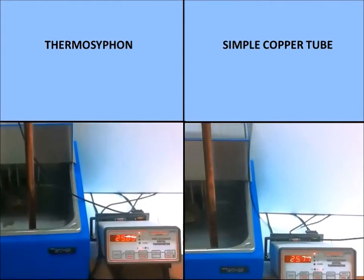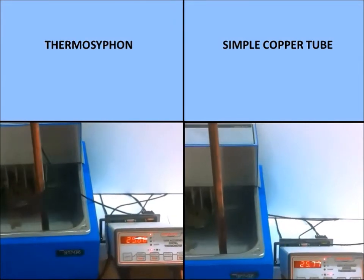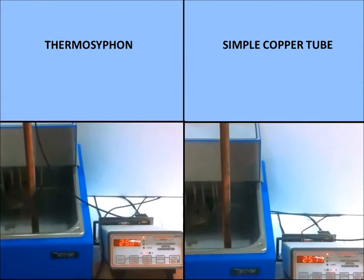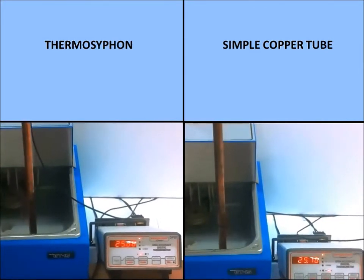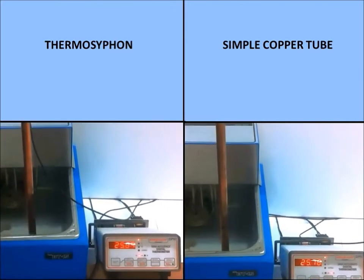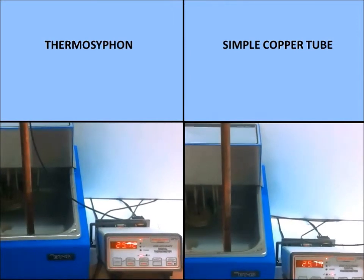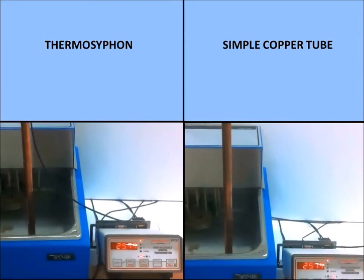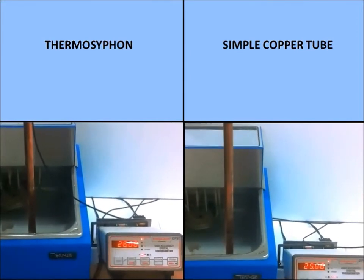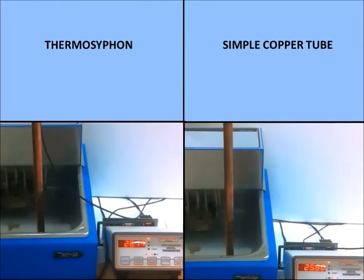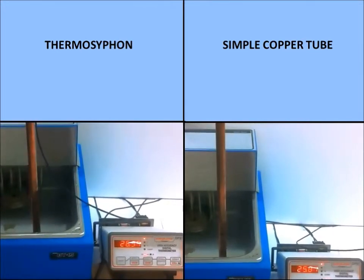Our lab technicians will now compare our device to a standard copper pipe. To start the experiment, they heated a water bath to 45 degrees. In the video on the right-hand side, they placed an ordinary copper pipe into the water bath. And on the left-hand side, they placed our thermosiphon into the water bath.